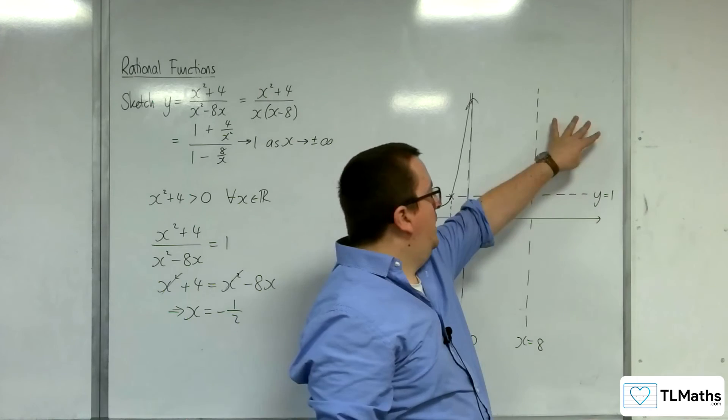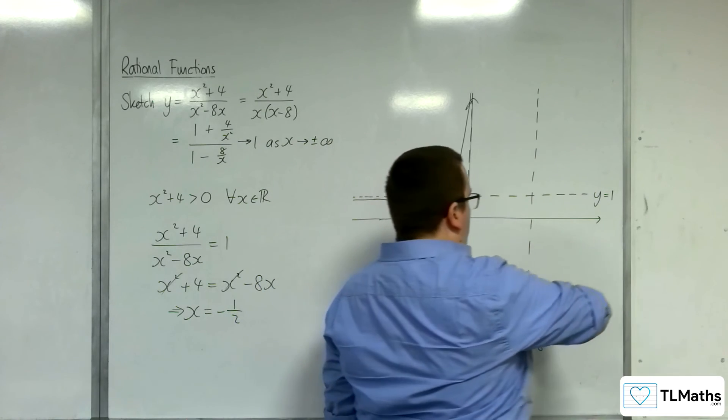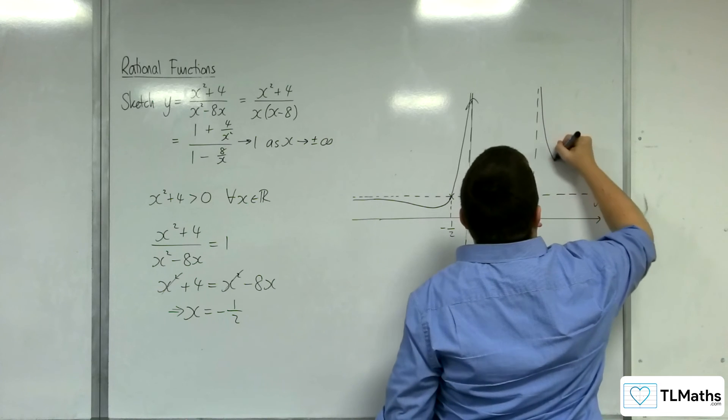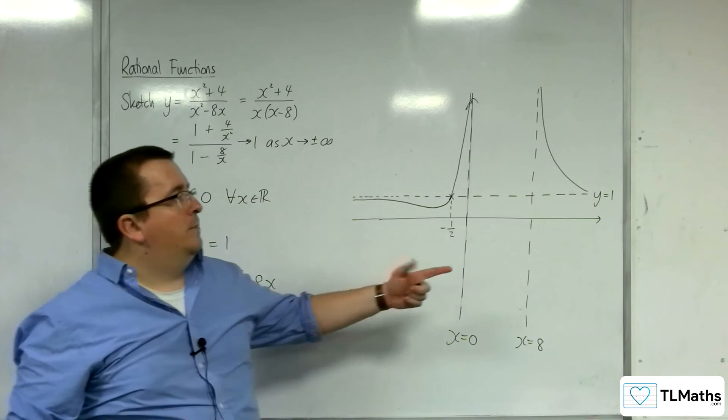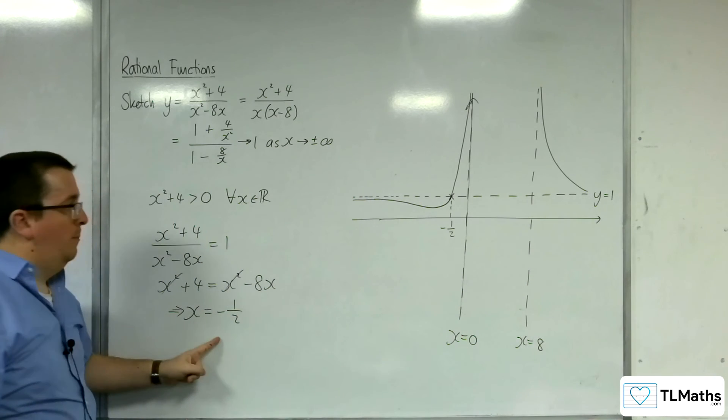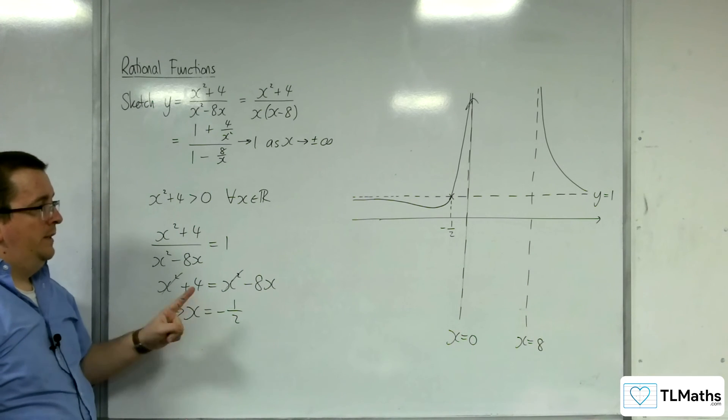How about over towards the right? Well, it can't be doing this because we can't cross the x-axis. So it's got to be coming down and going that way. It can't be crossing y = 1 and going back on itself, because there's only one point of intersection with the horizontal asymptote.